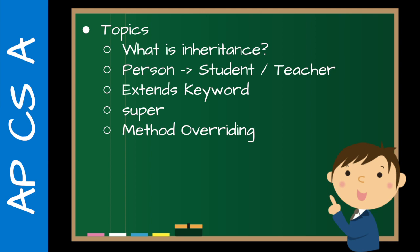In this video I'll talk about what inheritance is. The example I'll use is a person — like a student is also a person and a teacher is also a person — but they have some differences because students have certain attributes whereas teachers have other attributes. I'll talk about the actual coding of inheritance, using the extends keyword and the super method. Then we'll talk about method overriding, which is similar to method overloading, sort of.